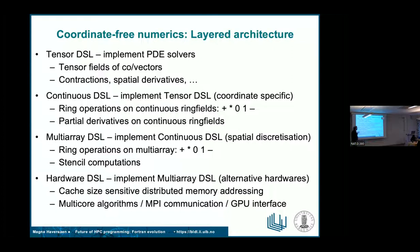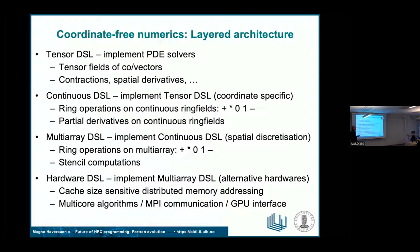The next level down is thinking about the hardware. We want to provide an implementation of the array level based on hardware characteristics. Depending on which target we want, we can write the implementation of the array taking into account cache sizes, using distributed memory addressing data across cores and CPUs. We can write multicore algorithms, use communication, or put them on a GPU — your choice when you implement the array.